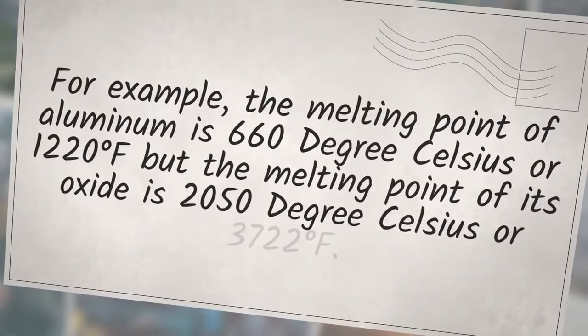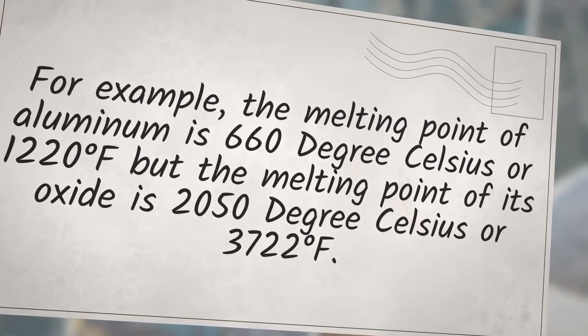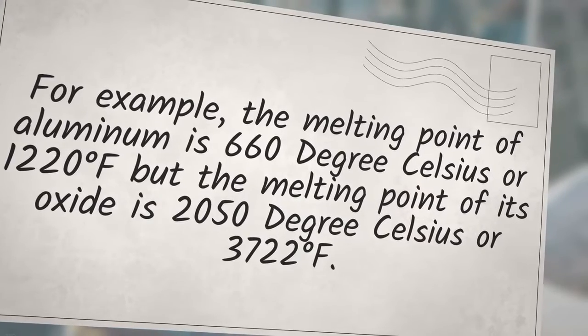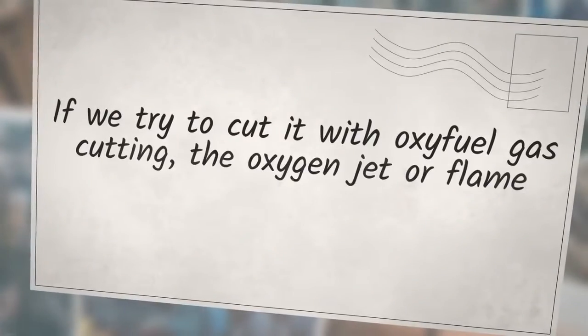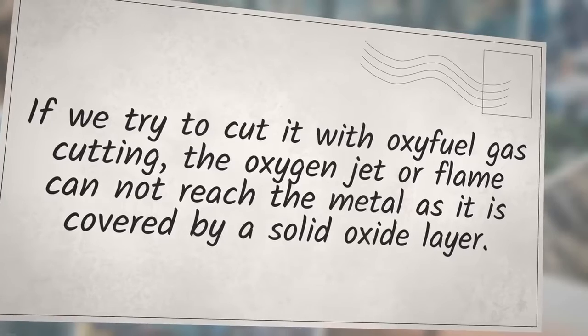For example, the melting point of aluminum is 660 degrees Celsius or 1220 degrees Fahrenheit but the melting point of its oxide is 2050 degrees Celsius or 3722 degrees Fahrenheit. If we try to cut it with oxyfuel gas cutting, the oxygen jet or flame cannot reach the metal as it is covered by a solid oxide layer.